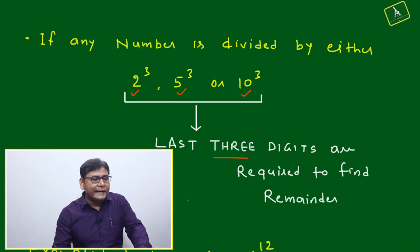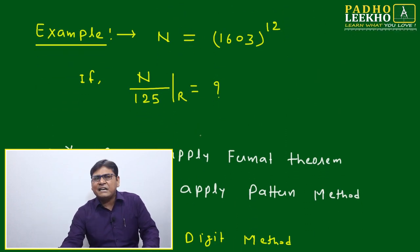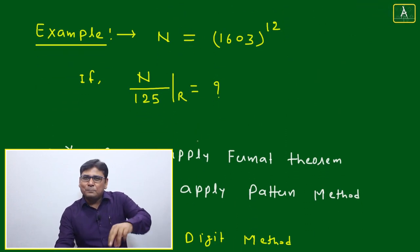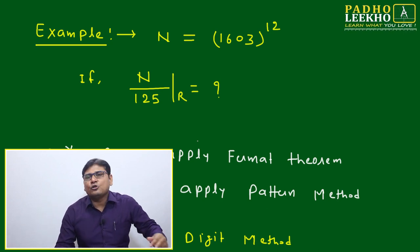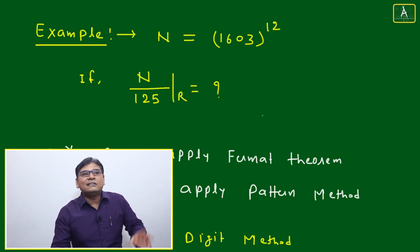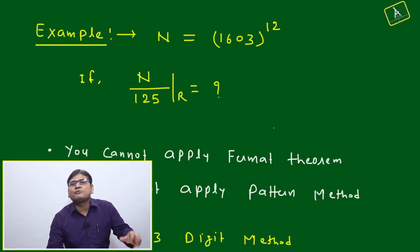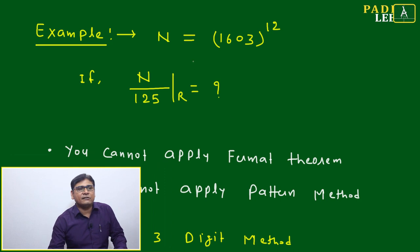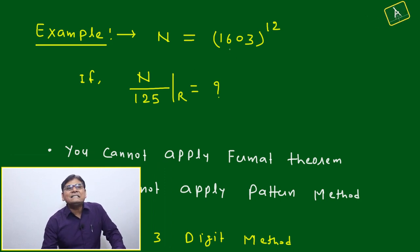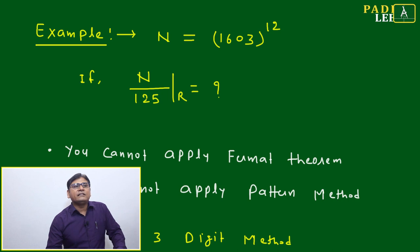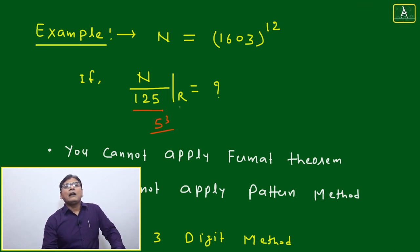We will take one example — that will be the best approach, rather than spending too long on theory. The number: let N = 1603^12, and this number is divided by 125 (which is 5^3). Find the remainder. To find the remainder when dividing by 5^q, you need the last three digits of N.